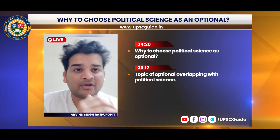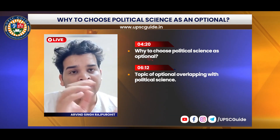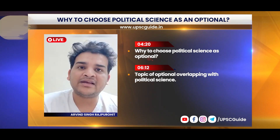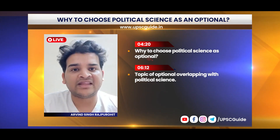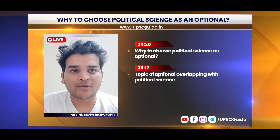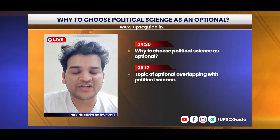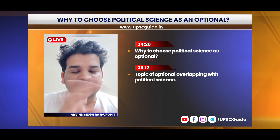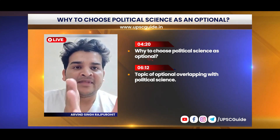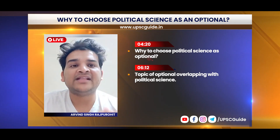In GS4, you have thinkers like John Locke, Plato, and Aristotle whose philosophy comes under GS4. All of these things are covered in political science. So if you look at the political science syllabus, it overlaps substantially with every GS paper.